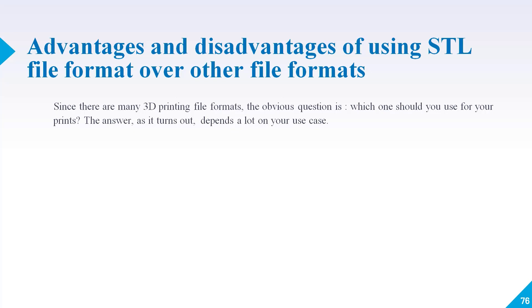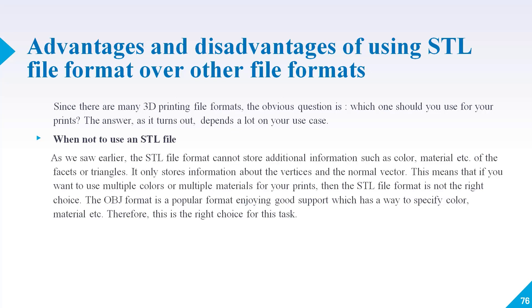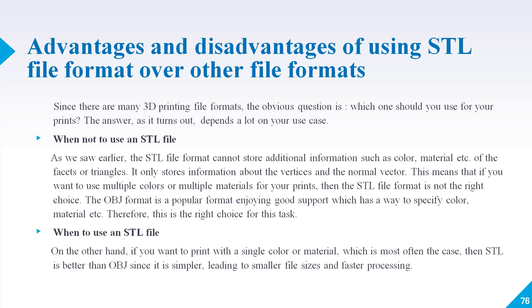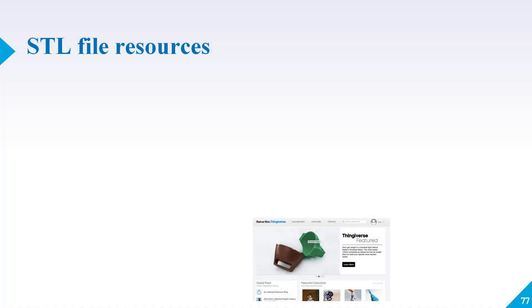What are the advantages and disadvantages of using STL file format over other file formats? Since there are many 3D printing file formats, the obvious question is which one should you use for your prints? When not to use an STL file: the STL file format cannot store additional information such as color or material properties. It only stores information about the vertices and the normal vector. This means that if you want to use multiple colors or multiple materials for your prints, then the STL file format is not the right choice. The OBJ format is a popular format with good support which has a way to specify color and materials. When to use the STL file: if you want to print with a single color or material, which is most often the case, then STL is better than OBJ since it is simpler, leading to smaller file sizes and faster processing.